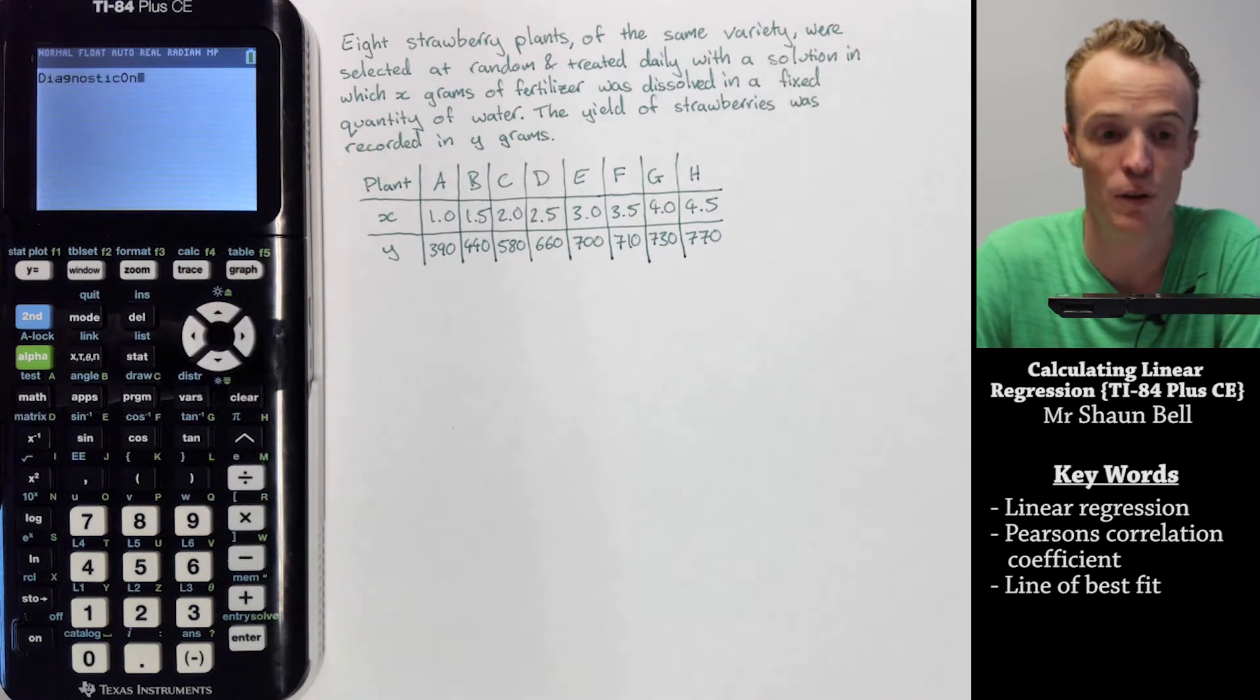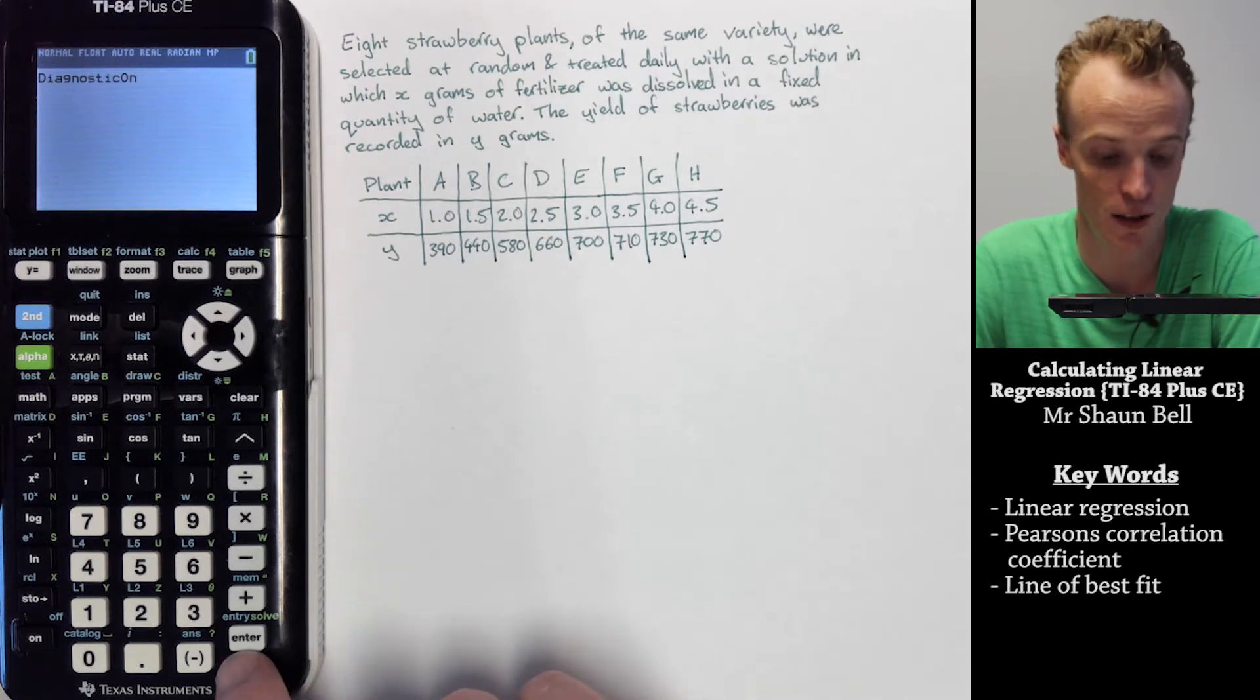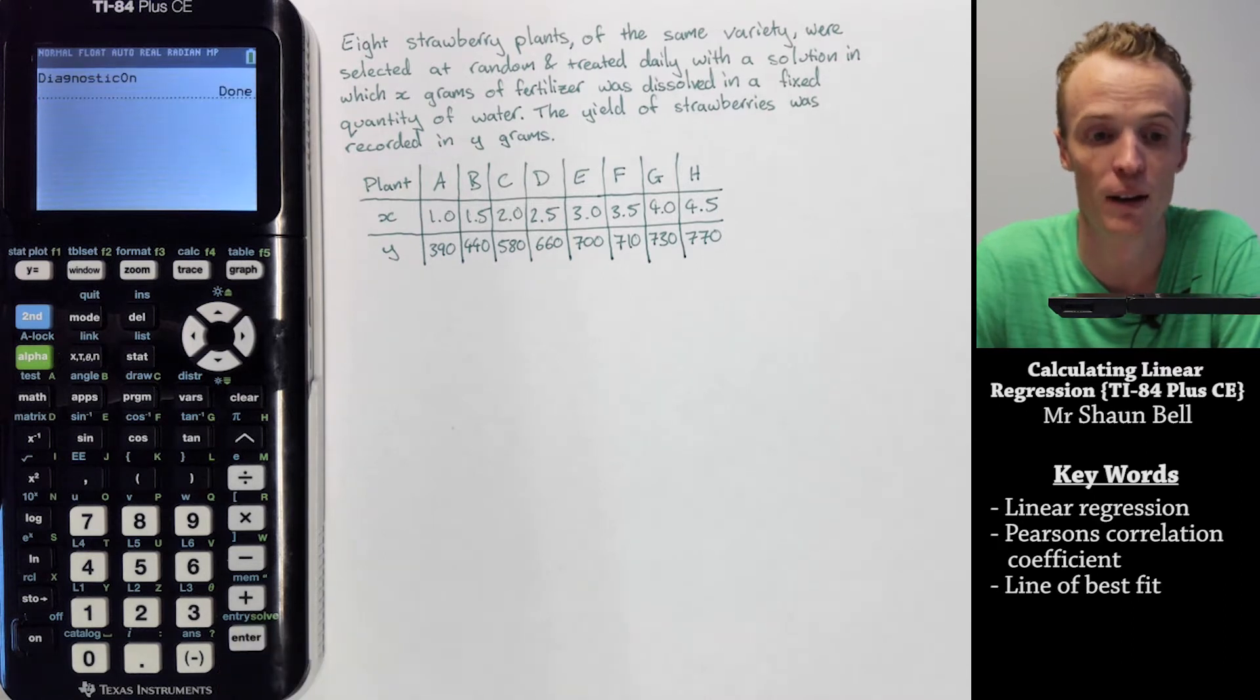You need to turn diagnostics on. This is not defaulted on your calculator, and you won't get Pearson's coefficient if you don't do this. Once you've done that, hit enter again and it will say it's on.